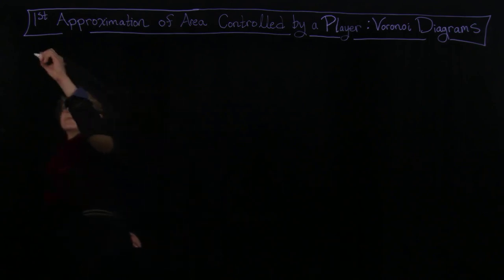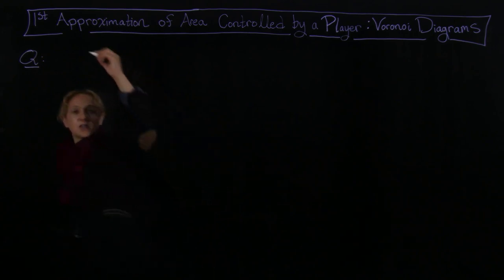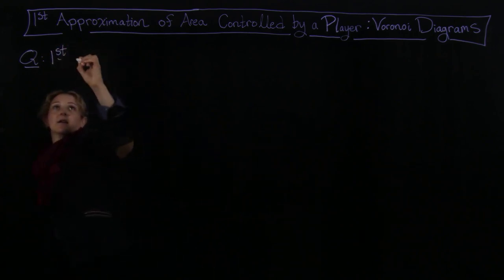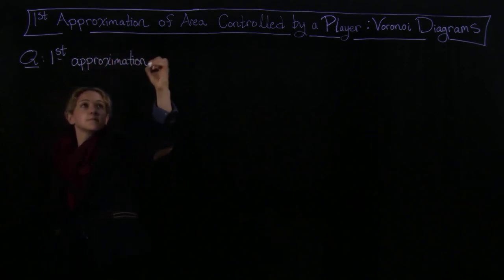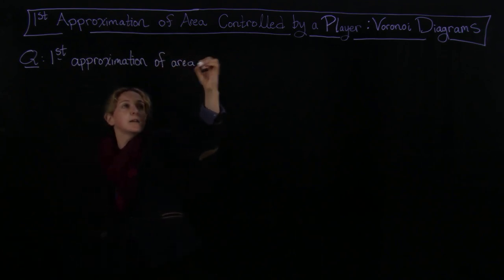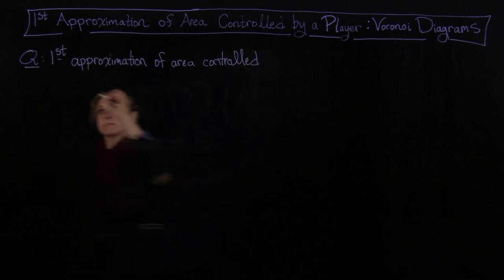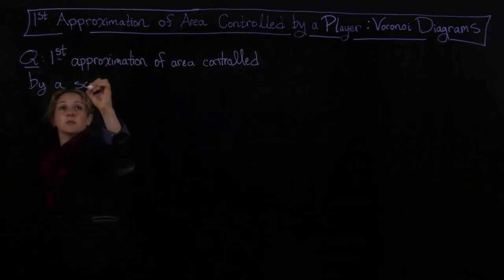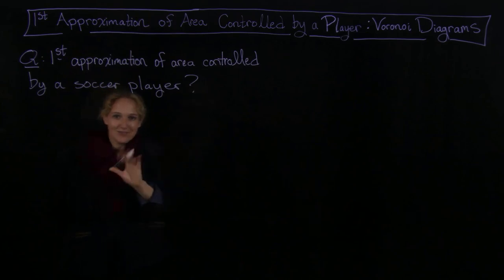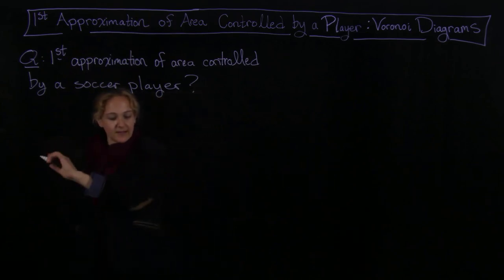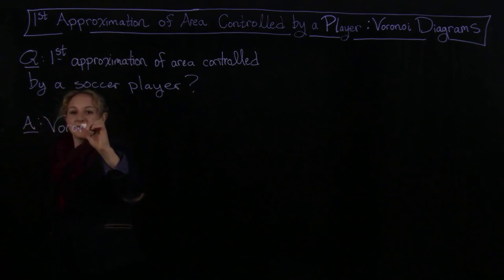The goal is going to be a first approximation of the area controlled by a soccer player. And then by combining the areas you could get the controlled area for an entire team. The answer is going to be Voronoi Diagrams, so we'll dive right into what those are.